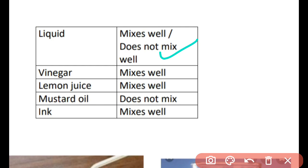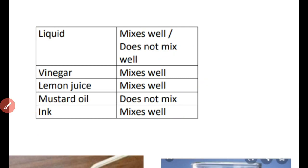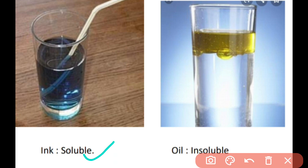Vinegar, which most of you have at home, mixes very well in water. Lemon juice also mixes well in water. Mustard oil, called sarson ka tel in Hindi, does not mix in water and forms a layer at the top. Ink gets mixed very easily in water — you can see in the picture that ink is very soluble in water, but oil does not get mixed no matter how much you stir it.